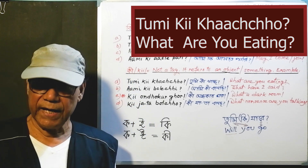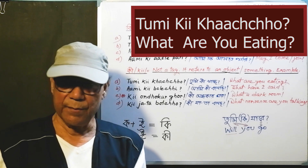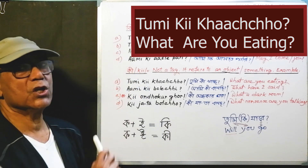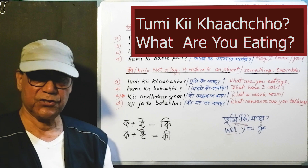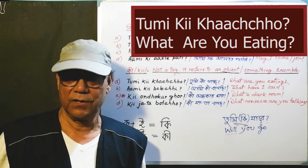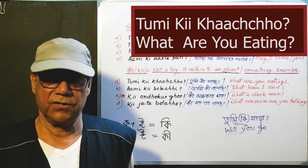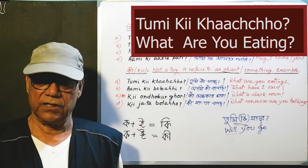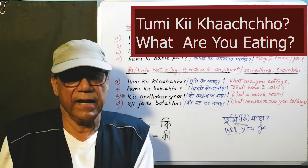But the stressed ki is not that ki. With stressed ki, 'tumi ki khatsho' means 'what are you eating?' — and you have to give the name of the food: 'ami bhaat khatsho' (I am eating rice), 'ami ruti khatsho' (I am eating bread), or 'I am eating scrambled eggs.'